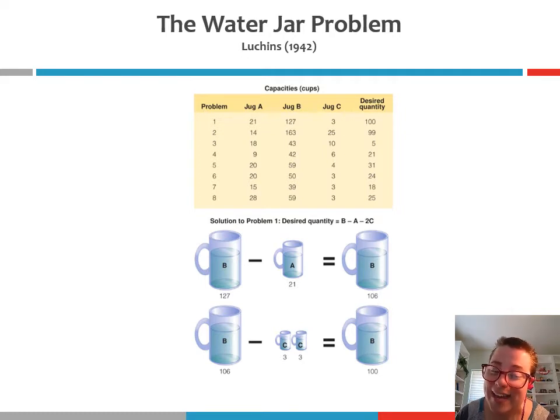Fewer of you might have noticed that there's a much simpler solution for problems seven and eight. For problem seven, you can simply add A and C together, and for problem eight, you can subtract them. So number seven is A plus C, and number eight is A minus C.